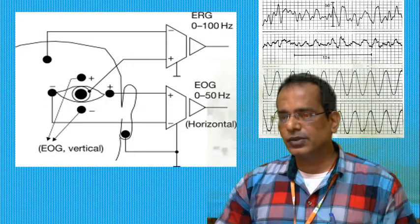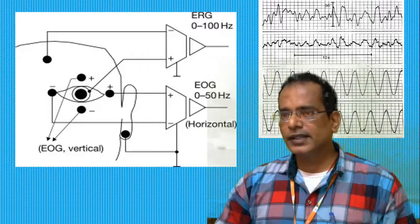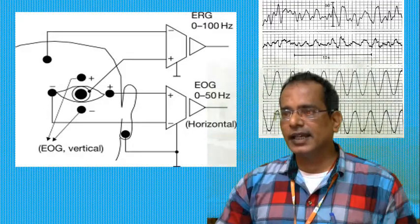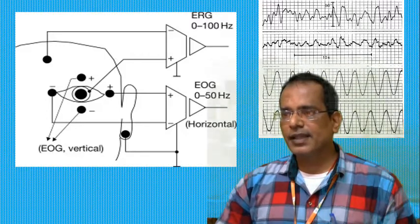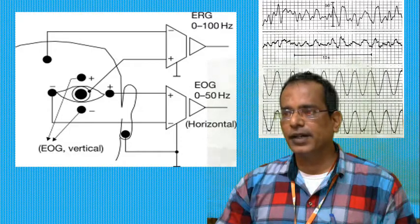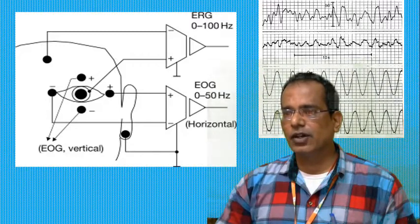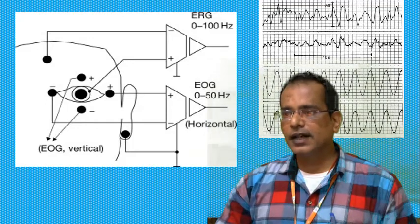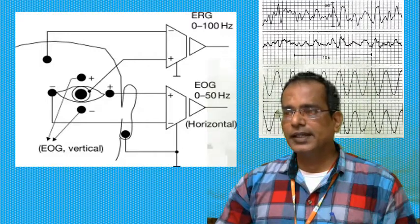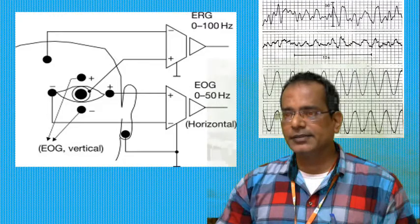EEG slow activity containing the eye electrodes is in phase. The sensitivity and filter settings for EOG are similar to those used for EEG signals. Eye movements are generally characterized by the sleep stage in which they occur and are an essential part of sleep scoring. Eye blinks are seen only in wakefulness as conjugate vertical eye movements occurring at 0.5 to 2 Hz with eyes open or closed.